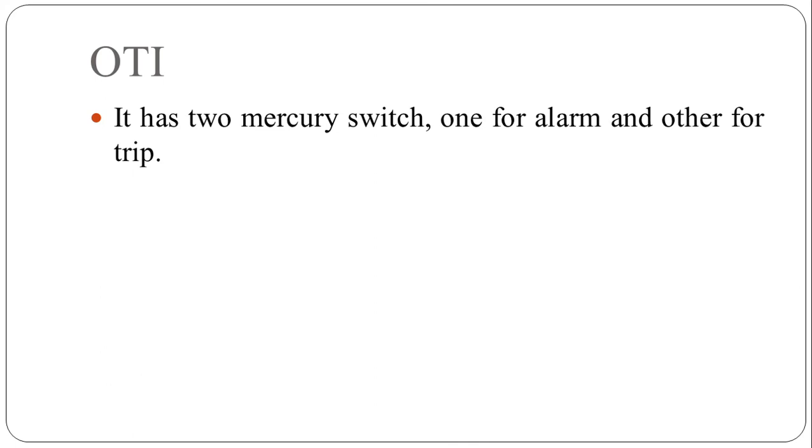Now what is oil temperature indicator. It has two mercury switches, one for alarm and another for trip. For example, switch 1 operates when temperature is at 75 degree.